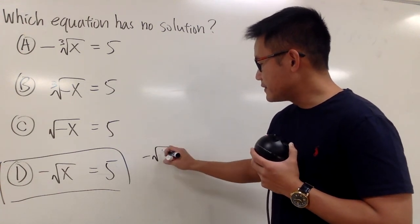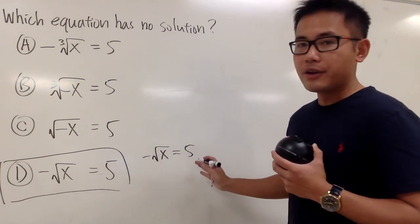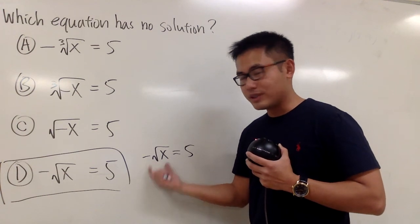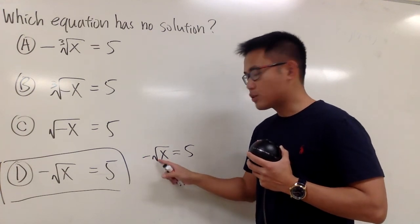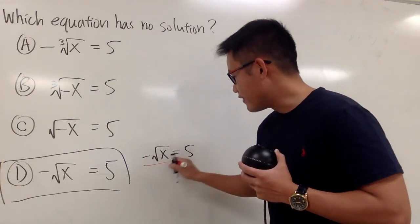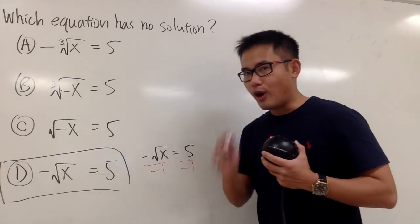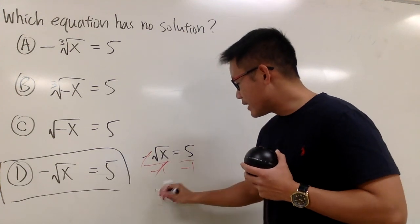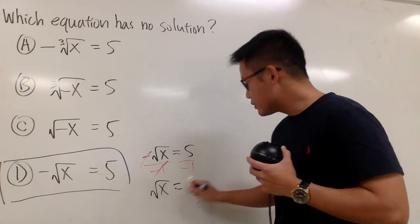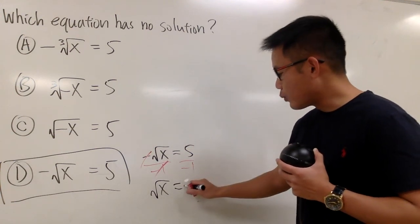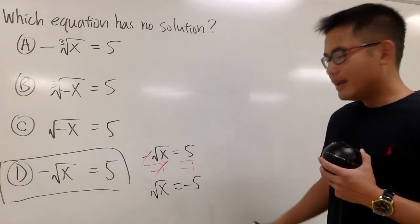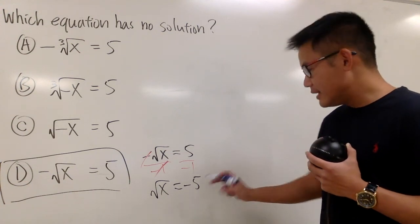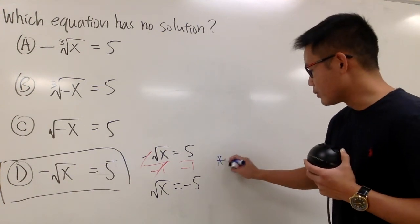If you look at negative square root of x equals 5, you always want to try to isolate the square root. This right here is negative square root of x, so let's divide both sides by negative 1. You cancel this, and you get square root of x equals 5 divided by negative 1, which is negative 5. When you have a square root equal to a negative number, this has no solution.